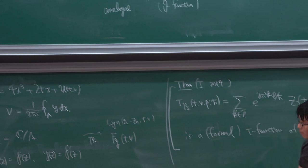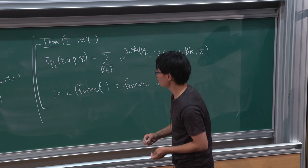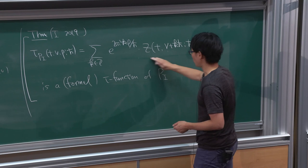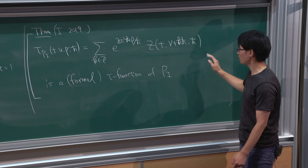Some remarks: this discrete Fourier transform was already studied by Mariño and Eynard — it is identical to the non-perturbative partition function. The leading term in h-bar is given by a theta function, and higher-order terms are written by some derivative of products of theta functions. This explains the analogy between the tau function and theta functions at a deeper level.